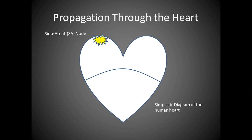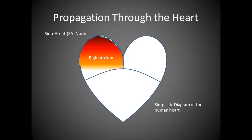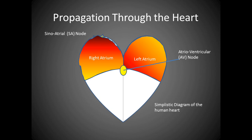The wave of depolarization initiated by the SA node is propagated through atrial myocardium first to the right atrium, then the left atrial wall. After encountering a delay in the atrioventricular or AV node, located in the septum close to the tricuspid wall, the wave of depolarization enters the ventricles through the His bundle.